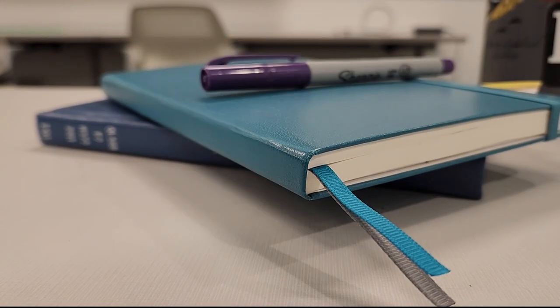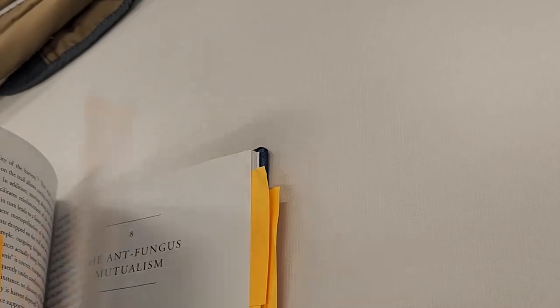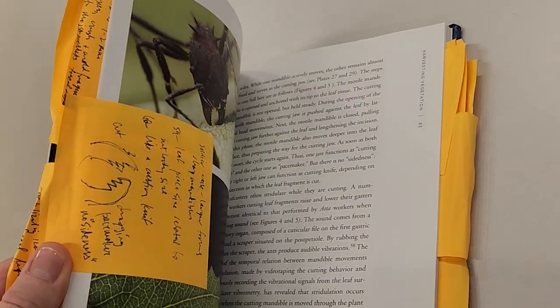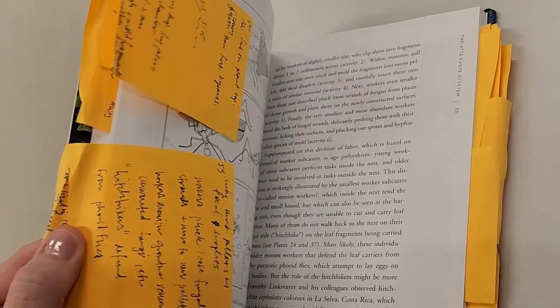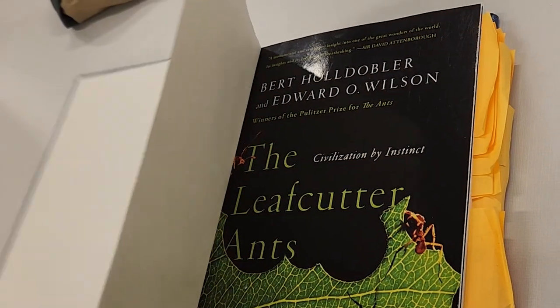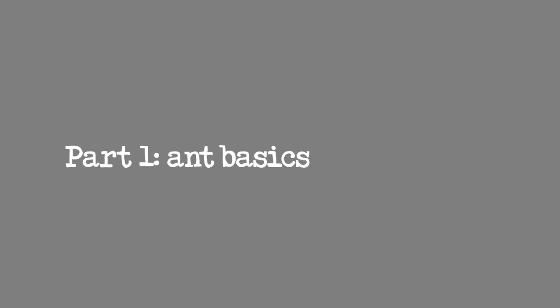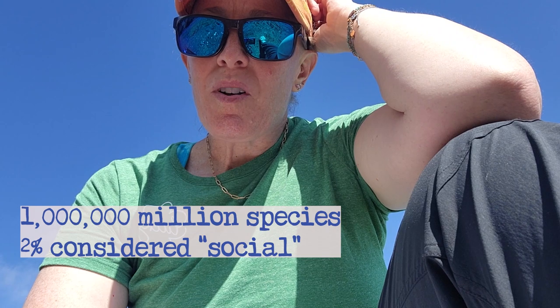I feel like I've done all the preparation that I can do, reading a few textbooks, visiting a few websites, and learning about leafcutter ants. I'm really excited to see some ants on our trip to Costa Rica — we leave tomorrow. There are about a million described species of insects in the world.